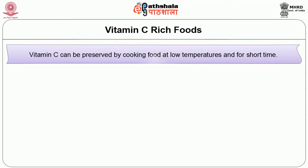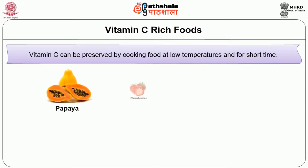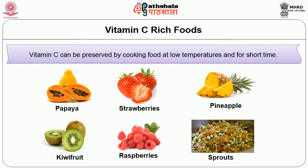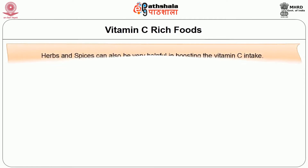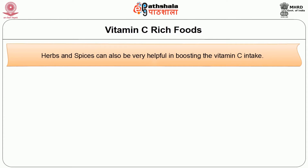Vitamin C can be preserved by cooking food at low temperatures and for a short time. All citrus fruits are excellent sources of vitamin C, but many non-citrus fruits are also highly rated sources. Papaya, strawberries, pineapple, kiwi fruit and raspberries are also excellent sources. Sprouts prepared from pulses are also good sources. Herbs and spices can also be very helpful in boosting vitamin C intake — one serving of parsley provides over half of the recommended daily amount.